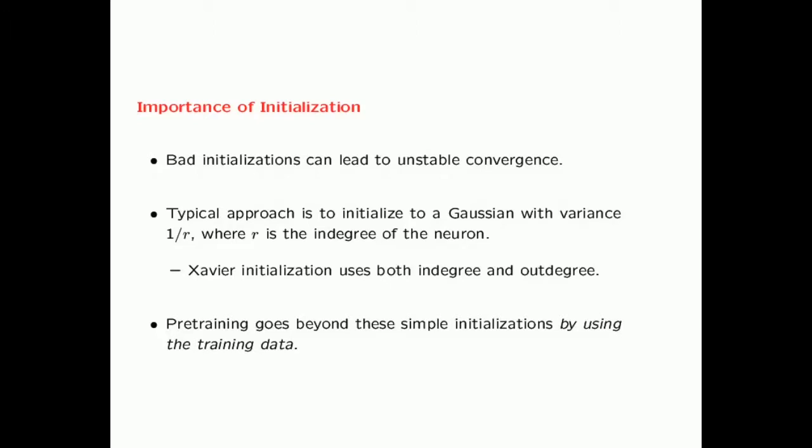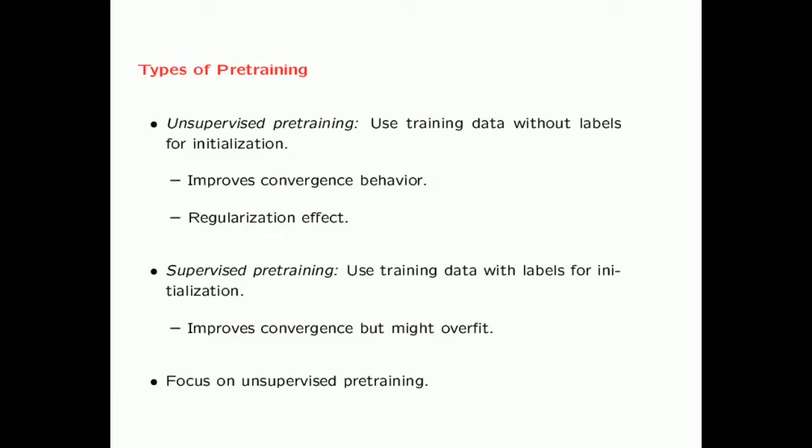Pre-training goes beyond these simple initializations by using the training data. As we will see in this lecture, pre-training not only helps in terms of convergence behavior of the neural network, but it also has a regularization effect. There are two types of pre-training commonly used. One is unsupervised pre-training, where you use training data without labels for initialization. One advantage is that if you have a lot of unlabeled data available, you can use it for unsupervised pre-training, even if you cannot use it for the final phase of supervised training.